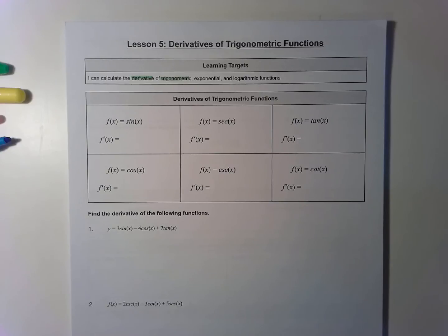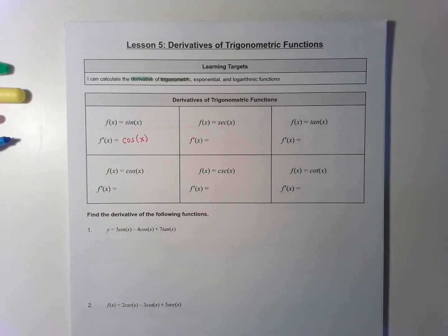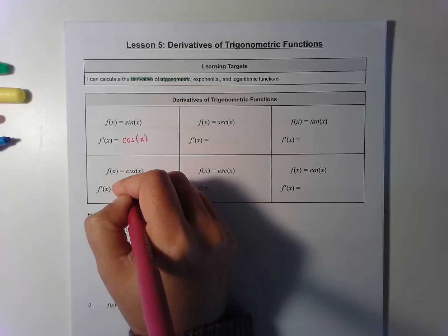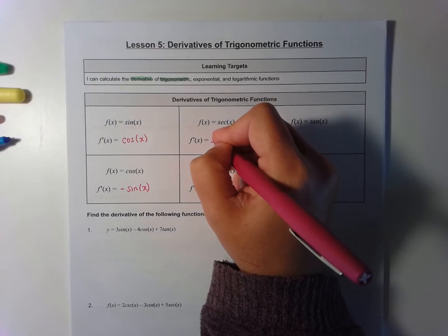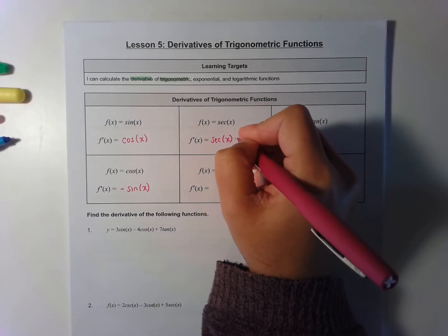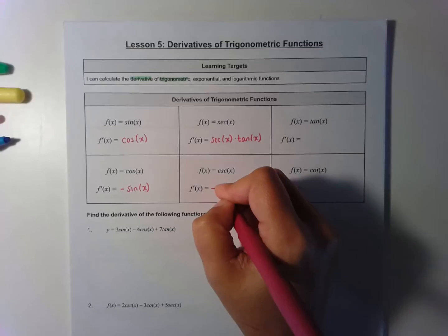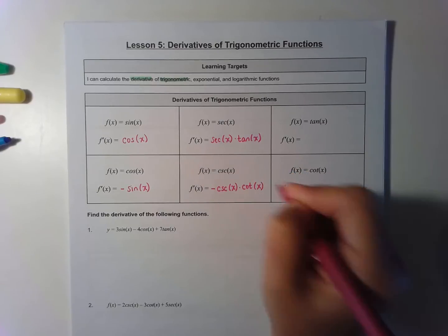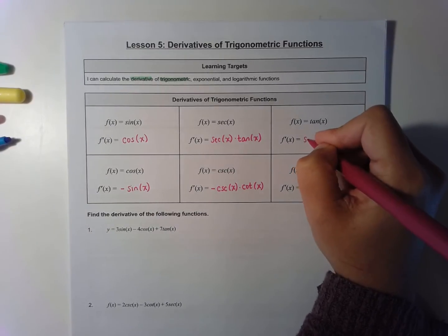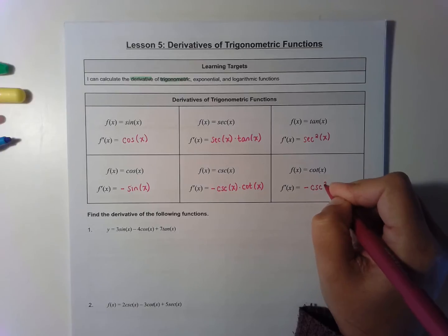The first thing I'm going to do is teach you some trig derivative rules. The derivative of sine is cosine of x, and the derivative of cosine of x is negative sine of x. The derivative of secant is secant of x times tangent of x, and the derivative of cosecant is negative cosecant of x times cotangent of x. The derivative of tangent is secant squared of x, and the derivative of cotangent is negative cosecant squared of x.